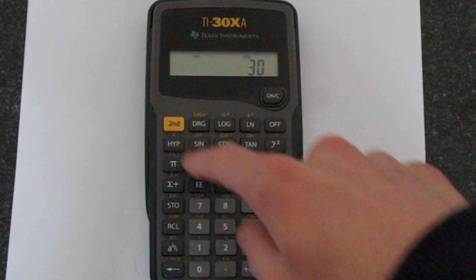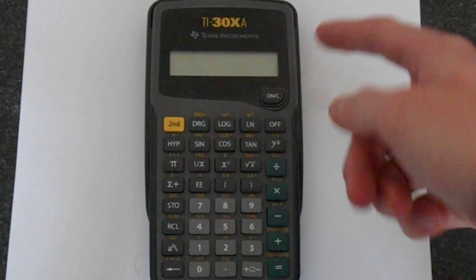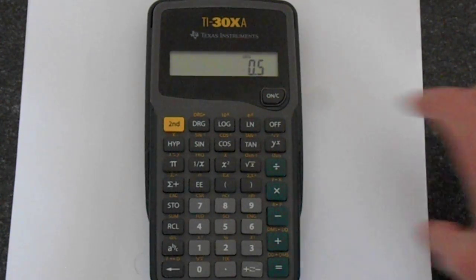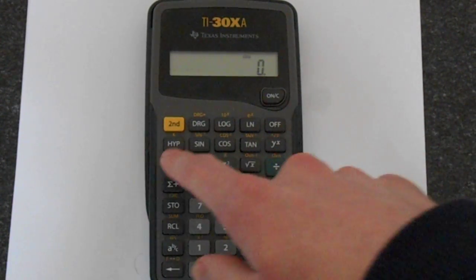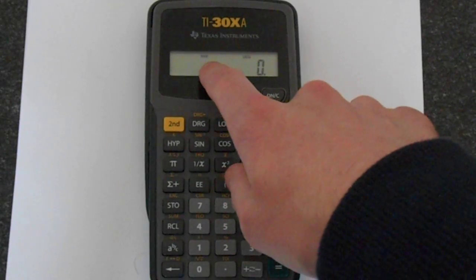So if you do 30, you're getting a hyperbolic sine. That's the hype button. You see that mode changes there.